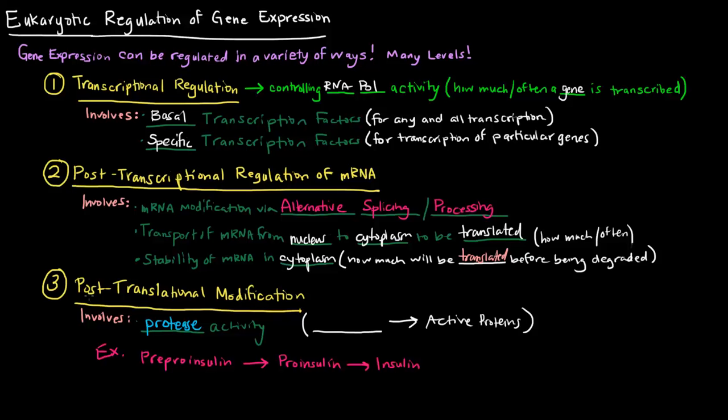So after an mRNA has been translated and you have a particular polypeptide chain, it can be cleaved by a protease. So generally speaking, what proteases do is when they do cut proteins, they take them from inactive precursors and turn them into active proteins. The inactive precursors are usually called zymogens.